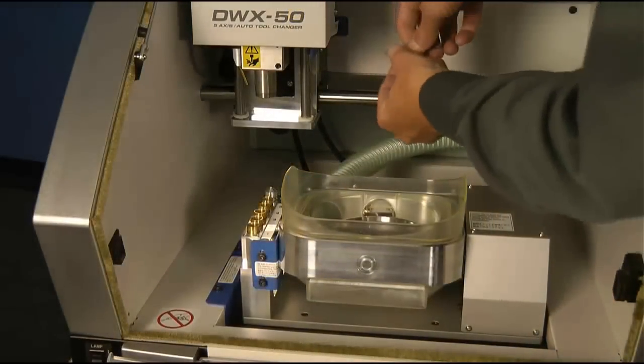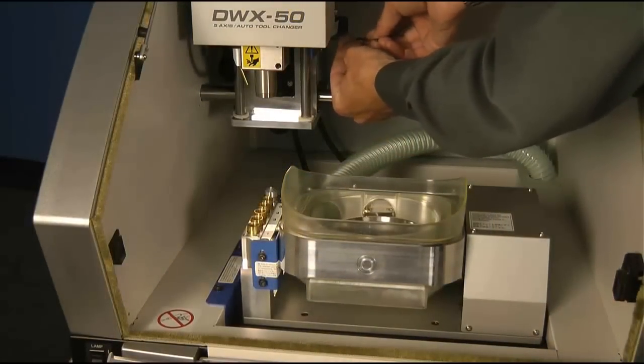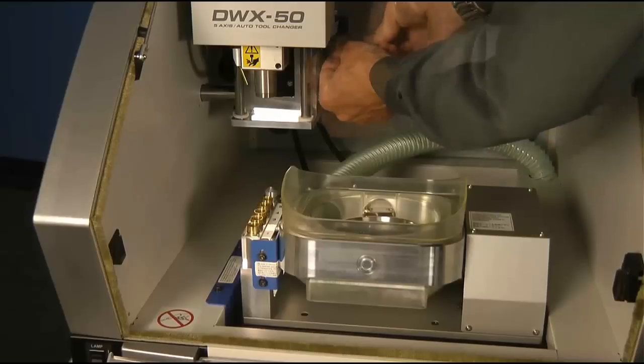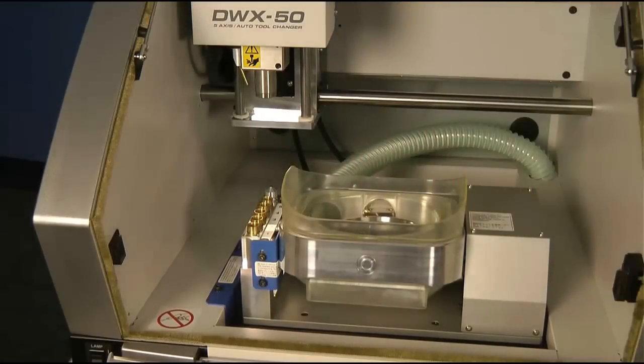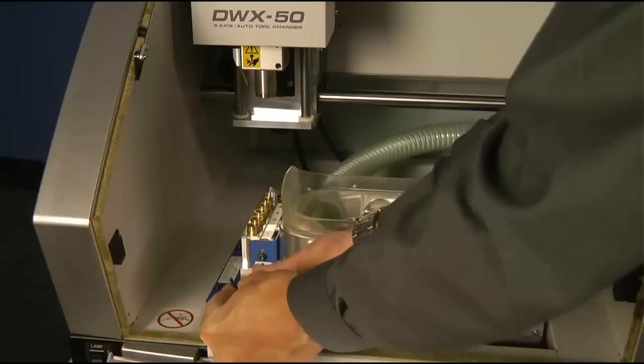Once you've placed your DWX50 in its resting position, locate the hex wrench that comes with the accessories and begin to remove the retaining screws holding the blue shipping brackets in place.